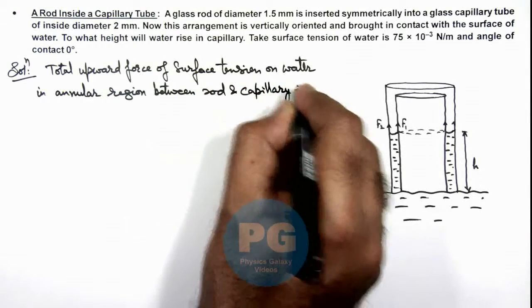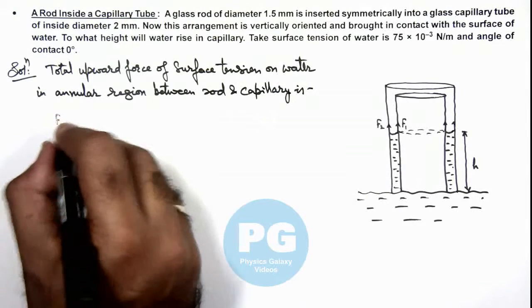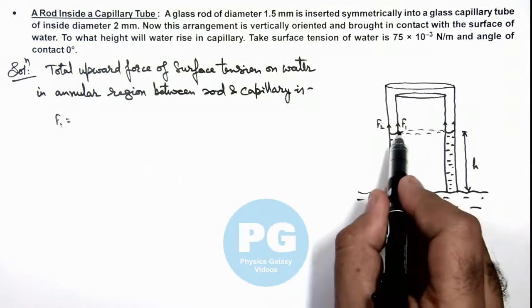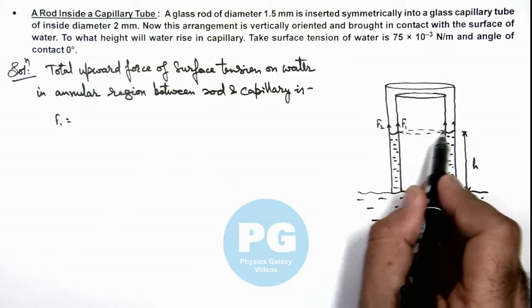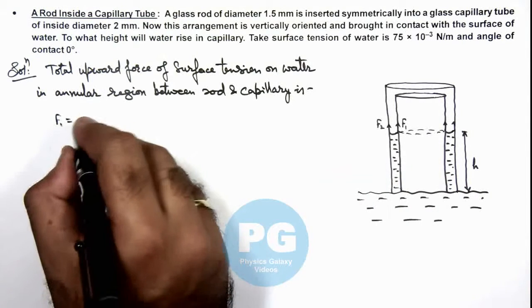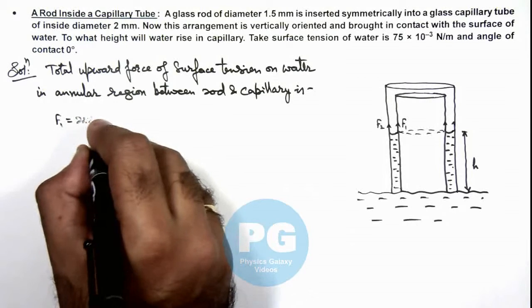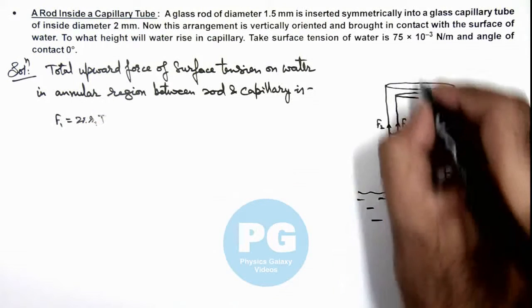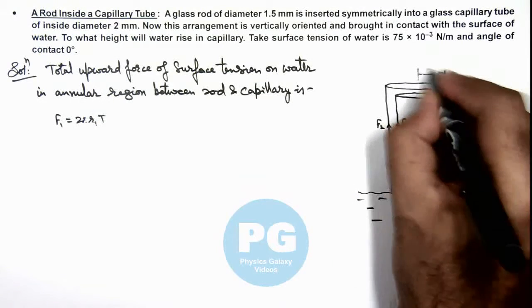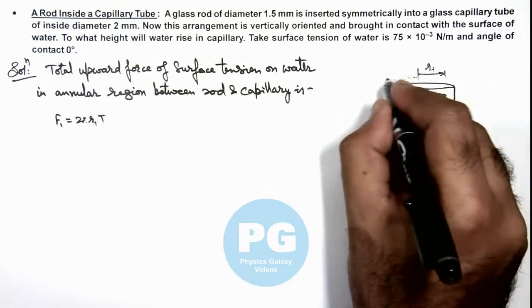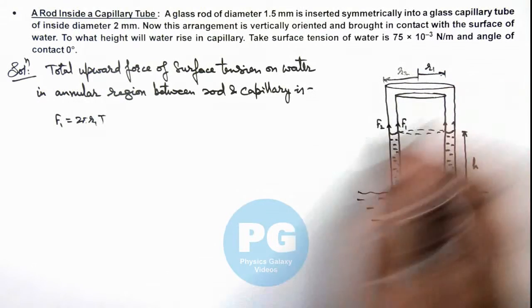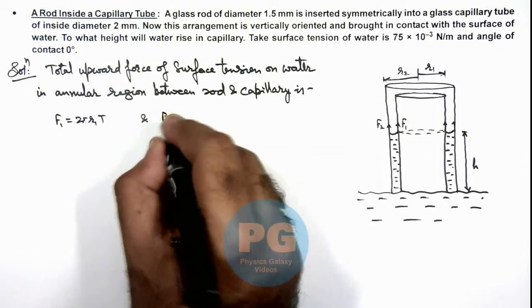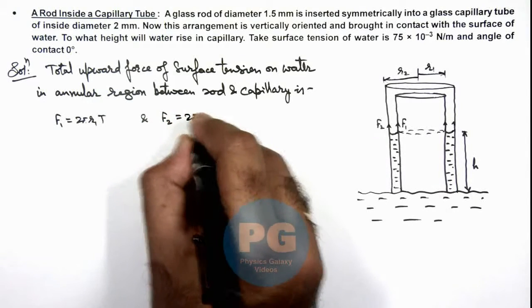Here the force F₁ which is acting due to the contact with the inner surface of cylinder can be given as 2πr₁T. If we consider r₁ is the radius of rod and we consider r₂ is the inner radius of capillary, then the force F₂ can be given as 2πr₂T.